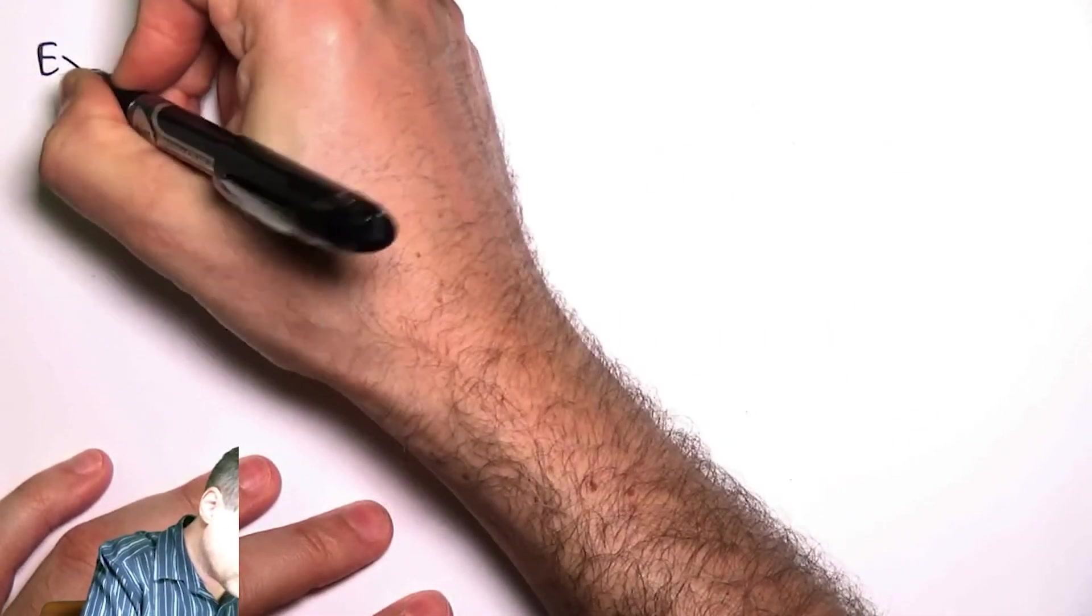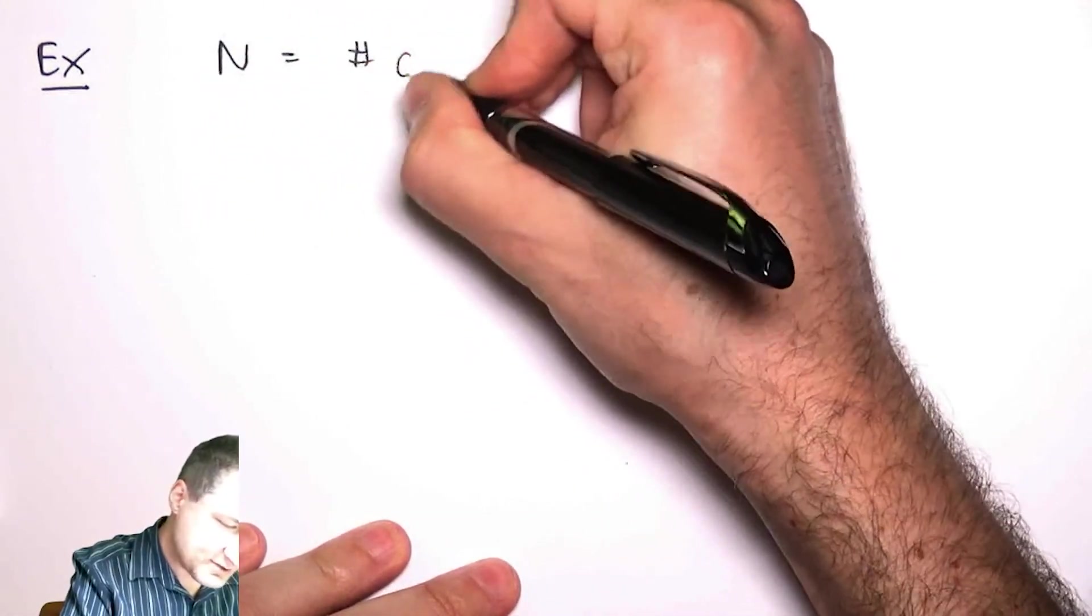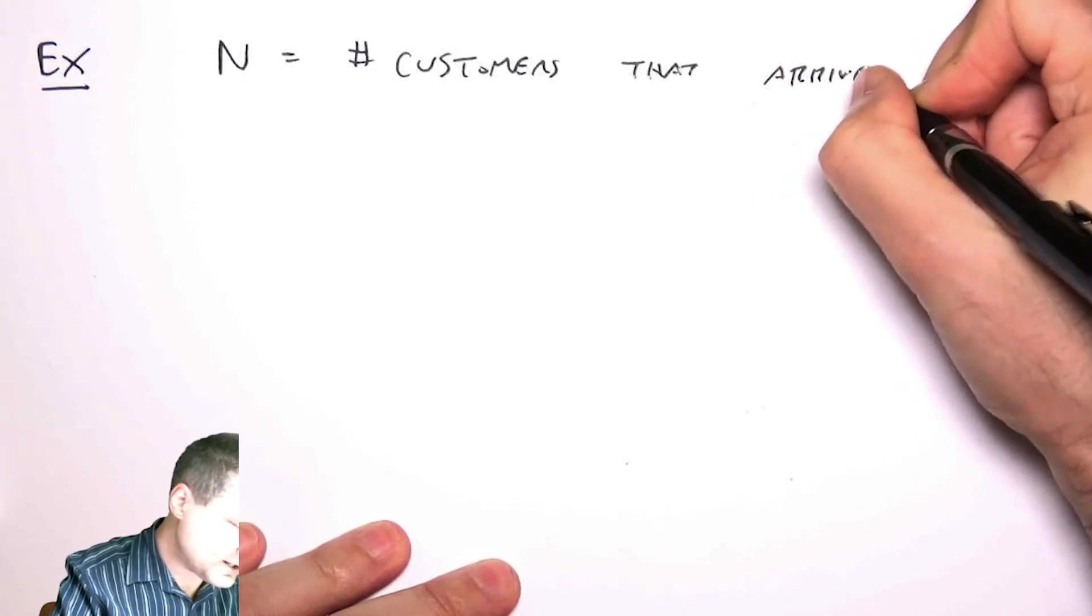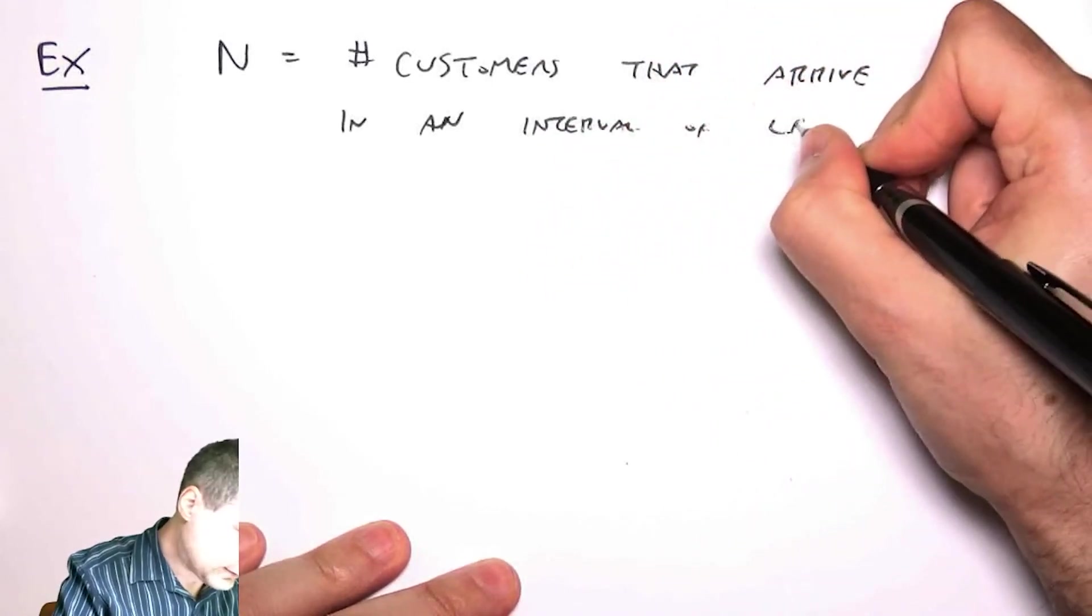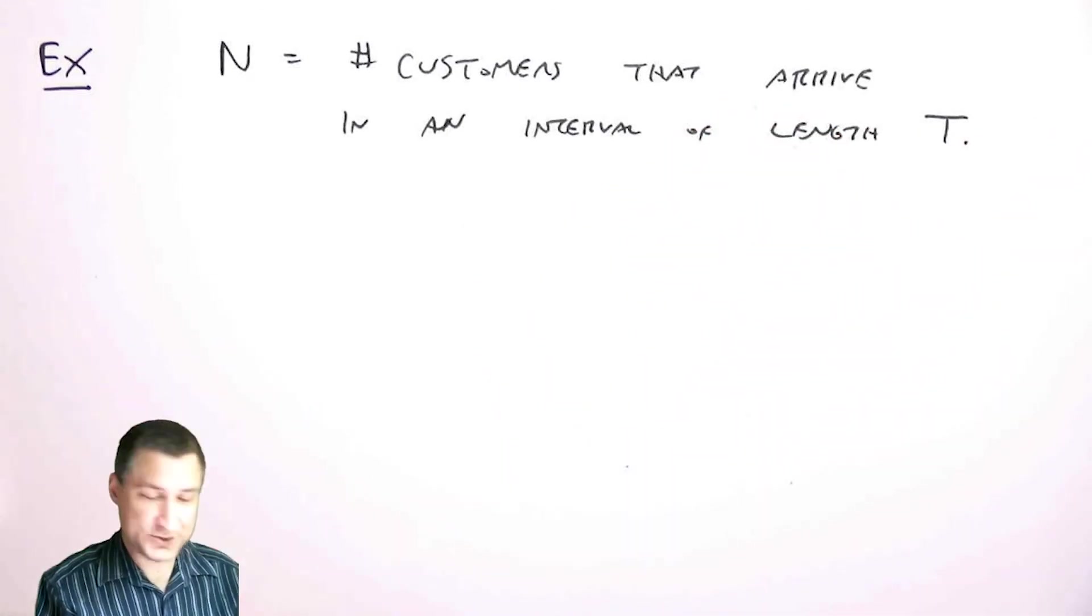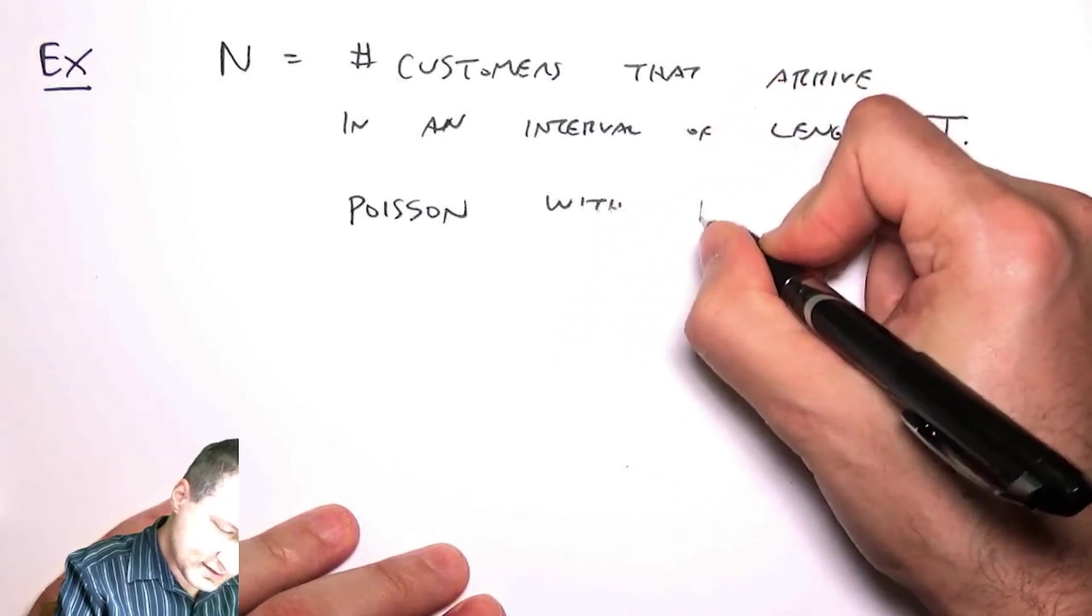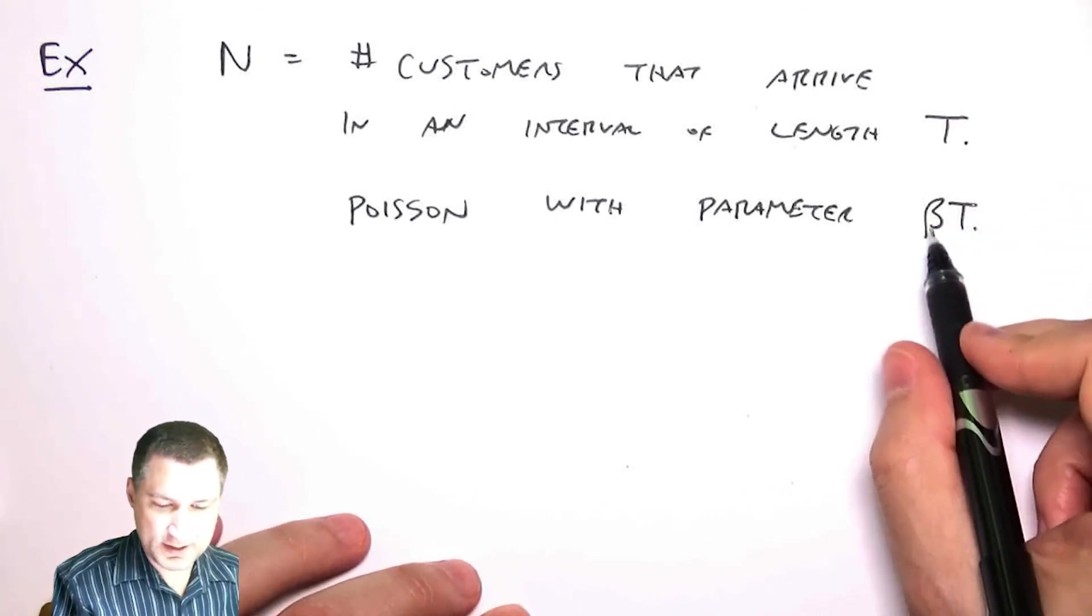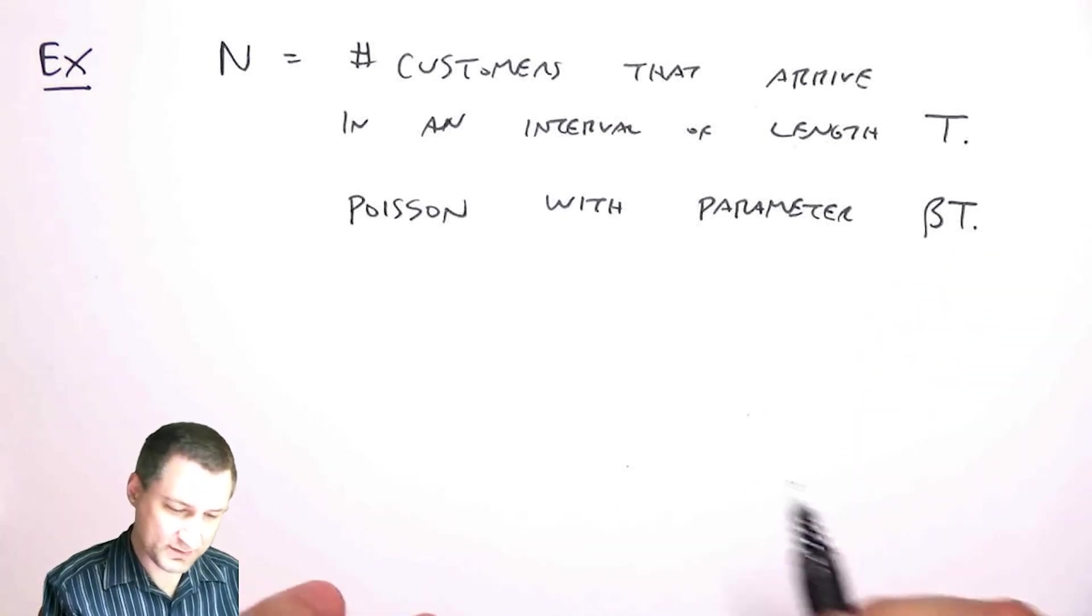So let me do another example, a little bit more like queuing theory, real world example. Let's suppose that N is equal to the number of customers that arrive at some sort of a place like a bank or a service station in an interval of length T. And so this is basically well modeled, like we talked about before, by a Poisson random variable. So this is with parameter, let's say beta T. This is basically kind of saying that beta is like the number of arrivals for length one. And if I have length T, this is my number of arrivals.